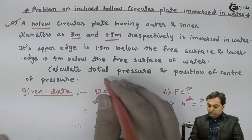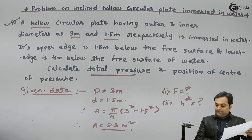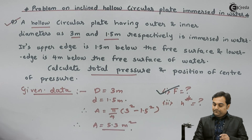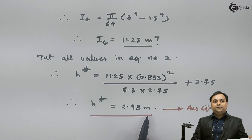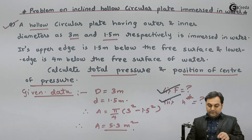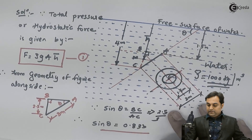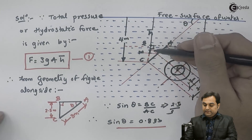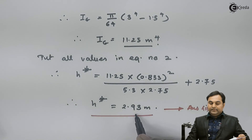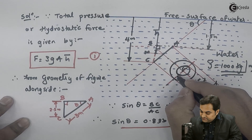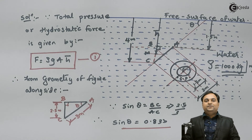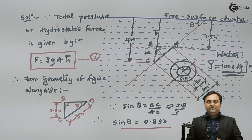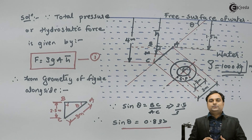Looking at the question, we needed to find two things. First, total pressure — the hydrostatic force — which is 143.02 times 10 raised to 3 Newton. Second, the position of center of pressure H star, which is 2.93 meter. Since H bar is 2.75 meter and H star is 2.93 meter, the center of pressure lies below the center of gravity. This problem is now complete — we have seen how to calculate total pressure and center of pressure for a hollow circular plate submerged in water.